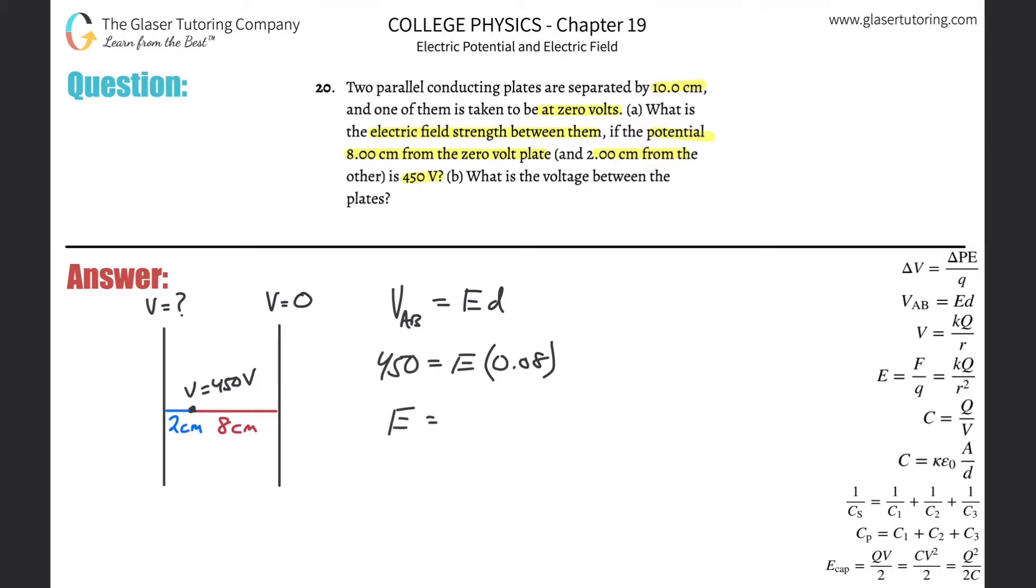Divide out 0.08 from both sides and what do we get? 450 divided by 0.08 is going to be 5625 volts per meter. So that's the electric field strength. Now remember that's the electric field strength between these two points, but that's also the electric field strength between the whole parallel plate because it's constant everywhere.